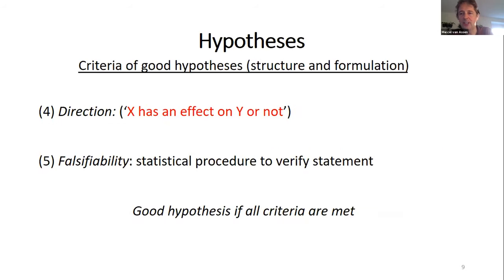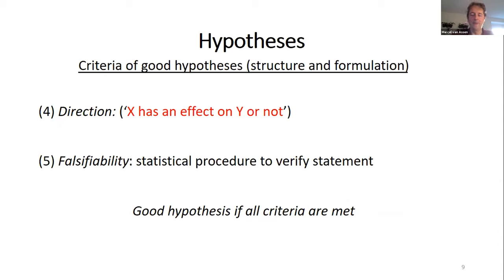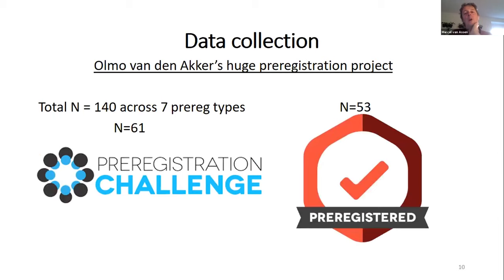The fourth criterion is direction — a hypothesis should say something about the direction of the effect. And fifth, we have falsifiability.